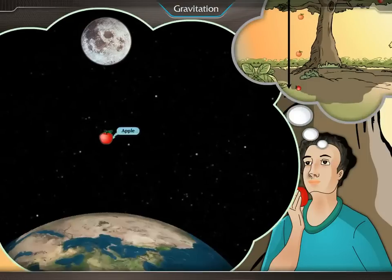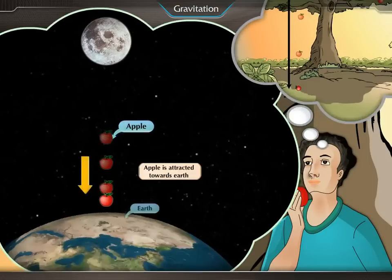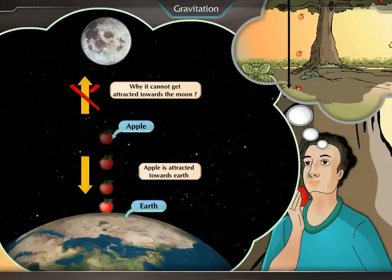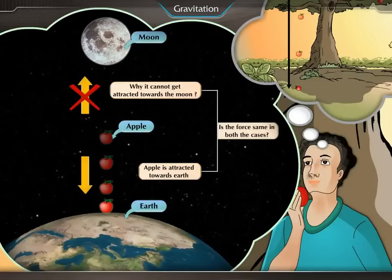He thought that if the apple is attracted towards the earth, then why it cannot get attracted towards the moon? Is the force the same?